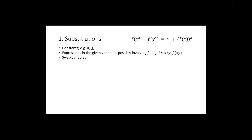Importantly, you shouldn't randomly substitute expressions — there should always be a motivation, for example some cancellation or counting something twice. But what you can always do is substitute zero, because if you substitute zero, stuff is bound to cancel.